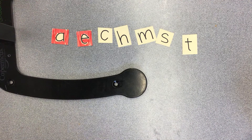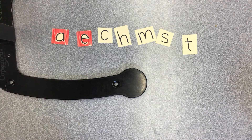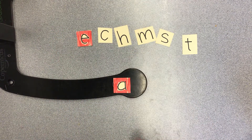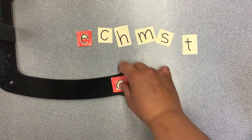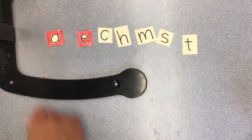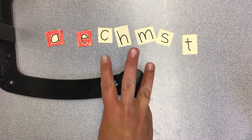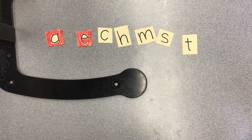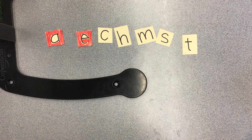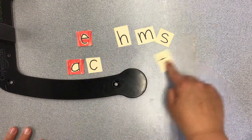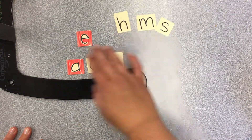The first word you're going to make is three letters, and it's the word act. I want to act in a play. So it's A, C, T — act.